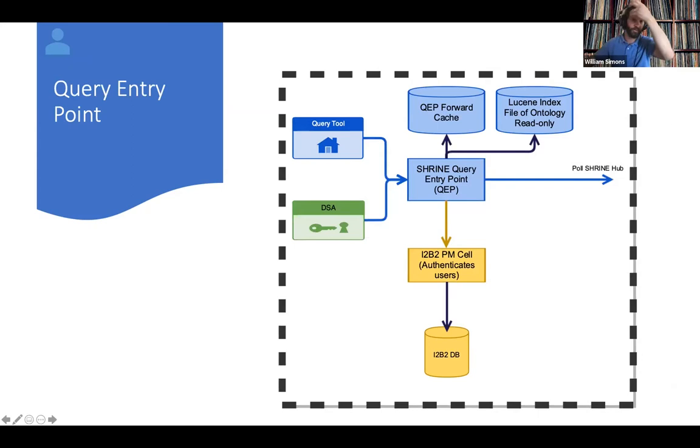Our query entry point is where the user-facing suite of tools are. Most relevant is the query tool, which you'll see more of in a demonstration later. This is where our users will be able to interact with the ontology, browsing and searching, composing those terms into interesting queries, and viewing and managing the results of their historical queries. The query tool communicates with our query entry point service using standard RESTful APIs, JSON over HTTPS.